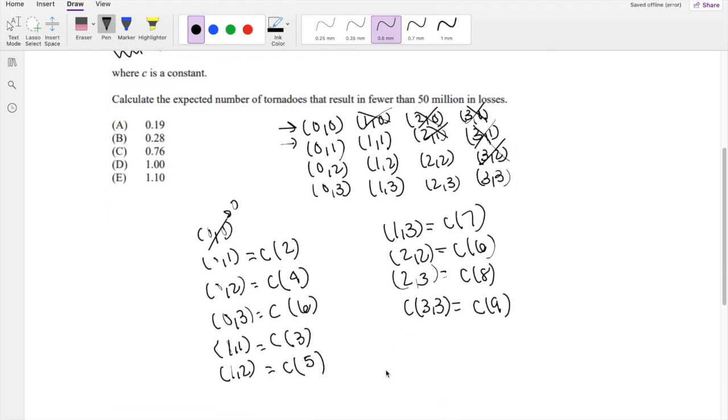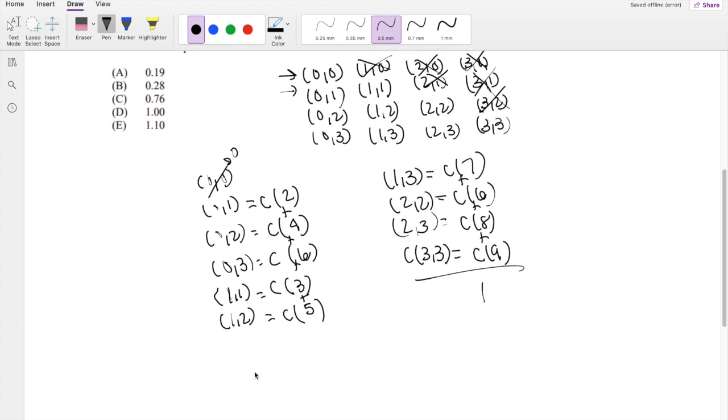So when we add all these numbers together, this should add up to 1. We can actually factor the C out and just add up the numbers. 2 plus 4 plus 6 plus 3 plus 5 plus 7 plus 6 plus 8 plus 9.